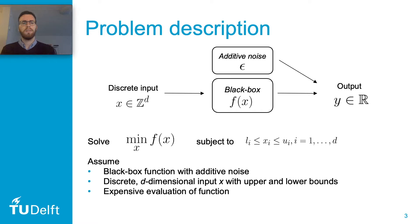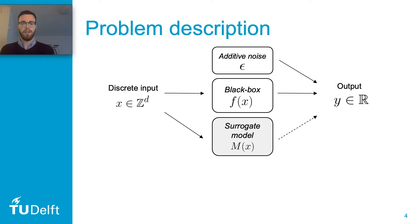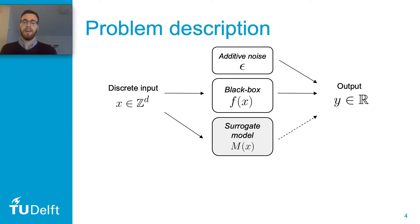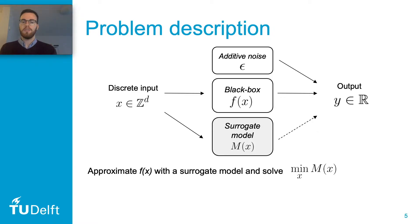Because the objective function is expensive to evaluate, it's not really optimal to use methods that require many function evaluations to solve this problem. So what can we do instead? Well, we could use a surrogate model. What it does is that the surrogate model approximates the objective function by learning from observing the input and output — basically the evaluations of this function. The main idea here is that the surrogate model is cheaper to evaluate, so let's try to solve another problem which is to minimize the surrogate model.